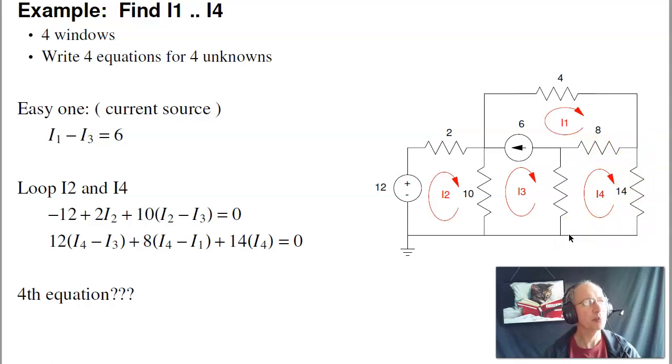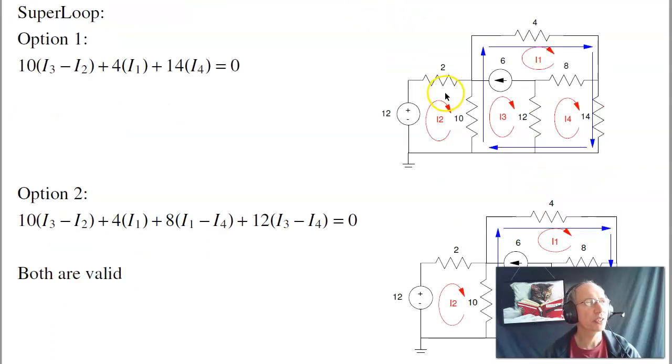Now I'm stuck. I need a fourth equation. I can't write the loop equation around I3 because I don't know this voltage. I can't write the loop equation around I1 because I don't know this voltage. The trick is a super loop to any closed path that doesn't include that current source.